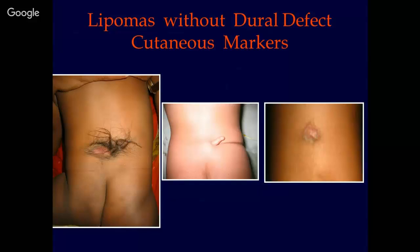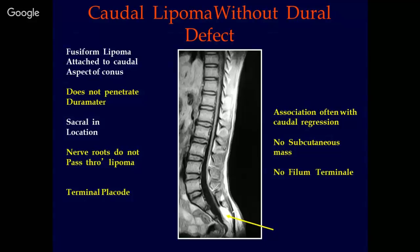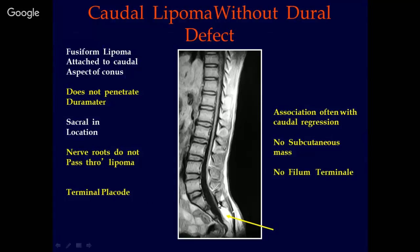This is a caudal lipoma without dural defect. Notice there is no subcutaneous swelling, no defect in the bone, and the lipoma is in a sacral location. The cord has extended all the way to the sacral region where the lipoma is adherent. The lipoma does not penetrate the dura, there is no subcutaneous mass, nerve roots do not pass through the lipoma, there is no filum terminale, and these lipomas are often associated with sacral agenesis — otherwise known as caudal regression syndrome.